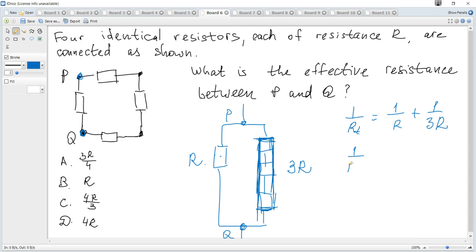And just common denominator on the right hand side is 3R, 3 plus 1, 4 and then RT is 3R over 4. So it's A.